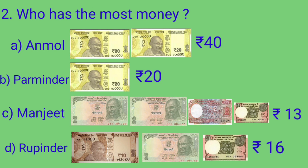On arranging 40, 20, 13, and 16, we can see that 40 has the greatest value. So Anmol has the most money — Rs. 40 is the most money here. We will put the tick mark at option A, Anmol.